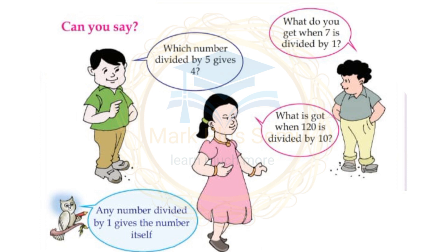Any number divided by 1 gives the number itself. For example: 1 divided by 1 gives 1, 2 divided by 2 gives 2. What do you get when 7 is divided by 1? 7 divided by 1 is equal to 7.